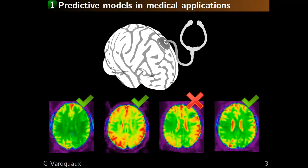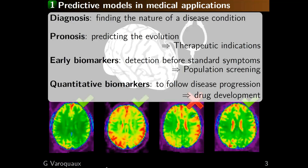In medical applications, we're looking at brains where some might have a disease or some problem we want to examine. It seems like a very well-posed problem for predictive models. There are different problems we can solve: the first is diagnosis — can we predict the nature of a disease condition? Another very important one is prognosis — can we predict the evolution? This might be useful because it enables the doctor to choose different therapies.